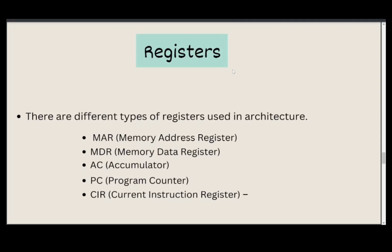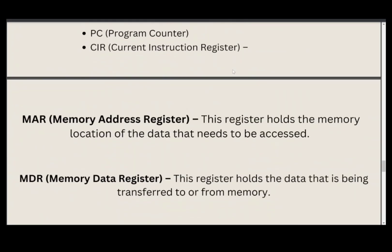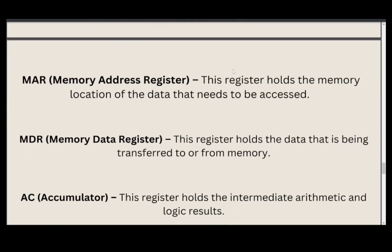There are different types of registers used in the architecture. Some of them are: MAR — Memory Address Register, MDR — Memory Data Register, AC — Accumulator, PC — Program Counter, and CIR — Current Instruction Register. Now let us discuss each one of them.